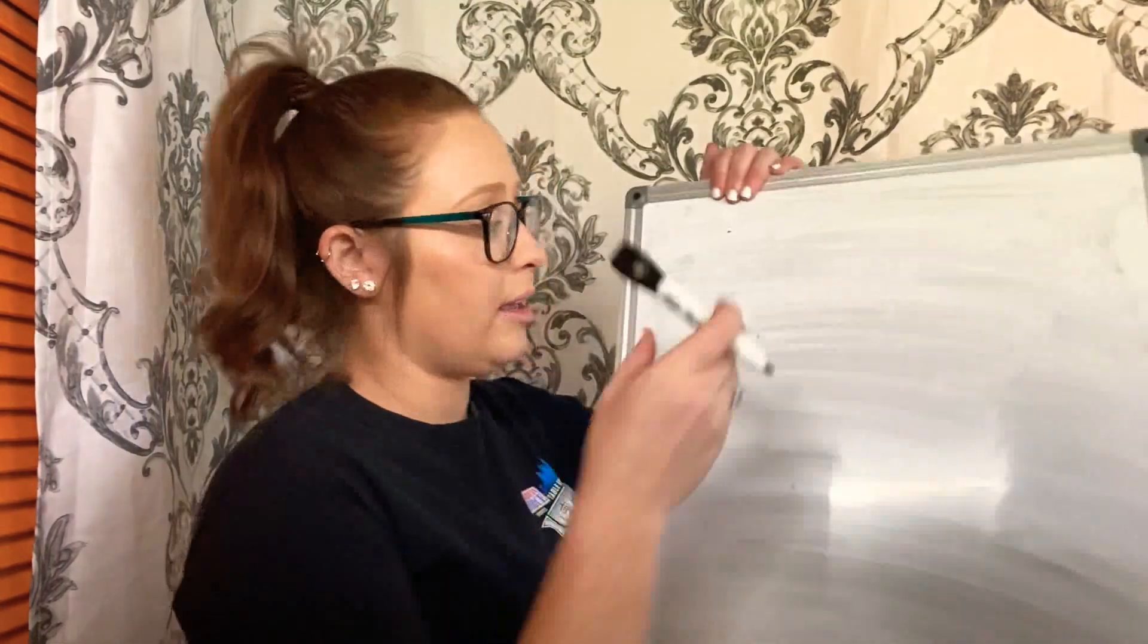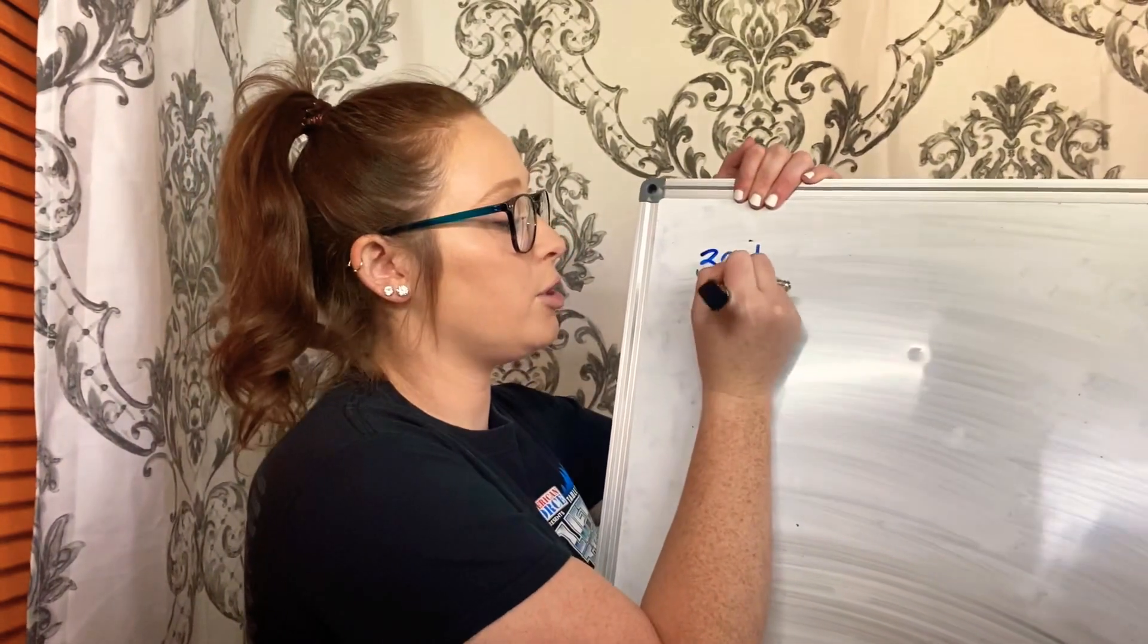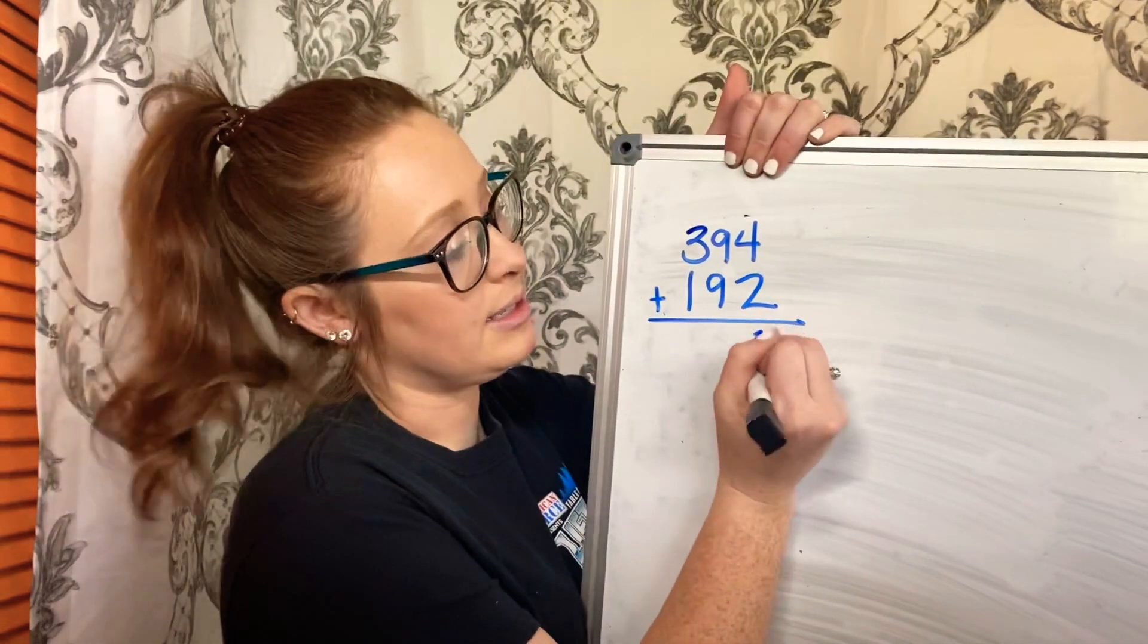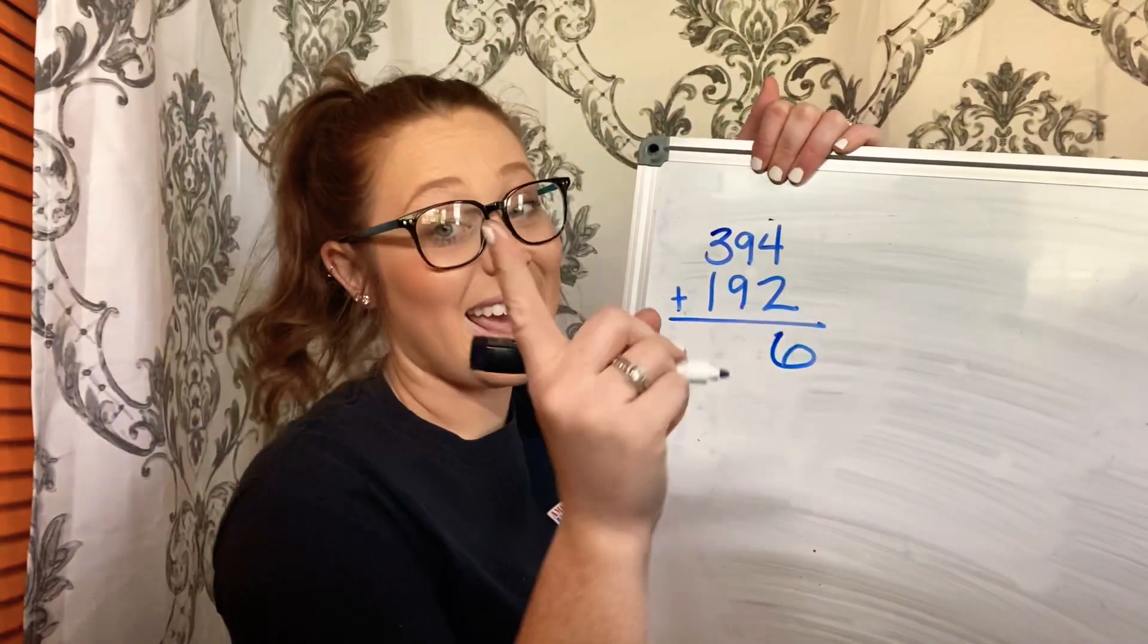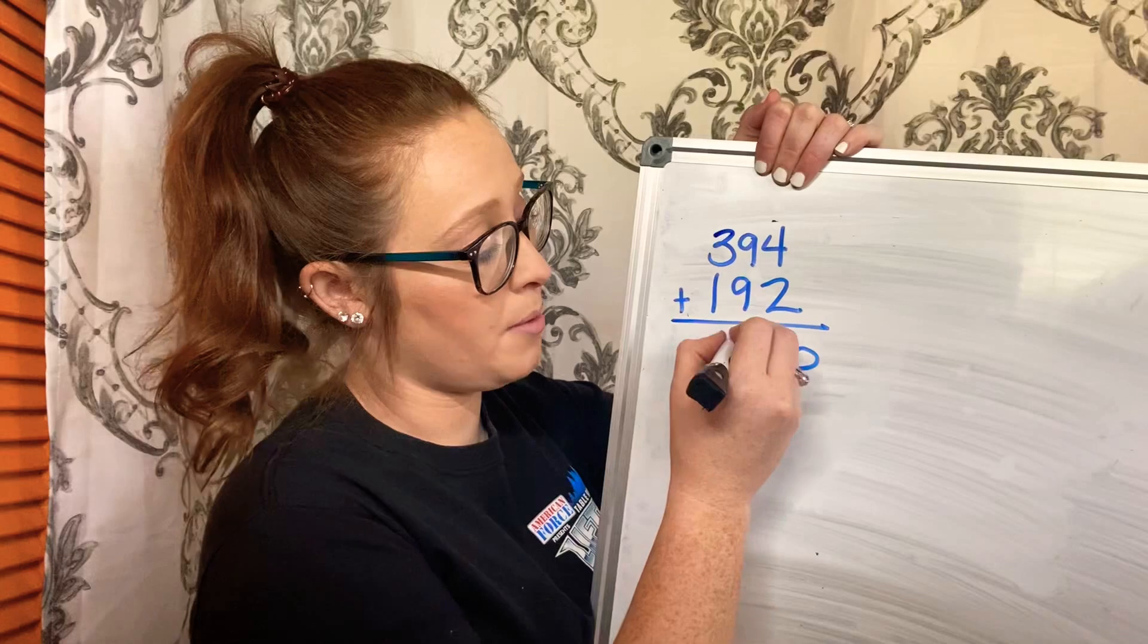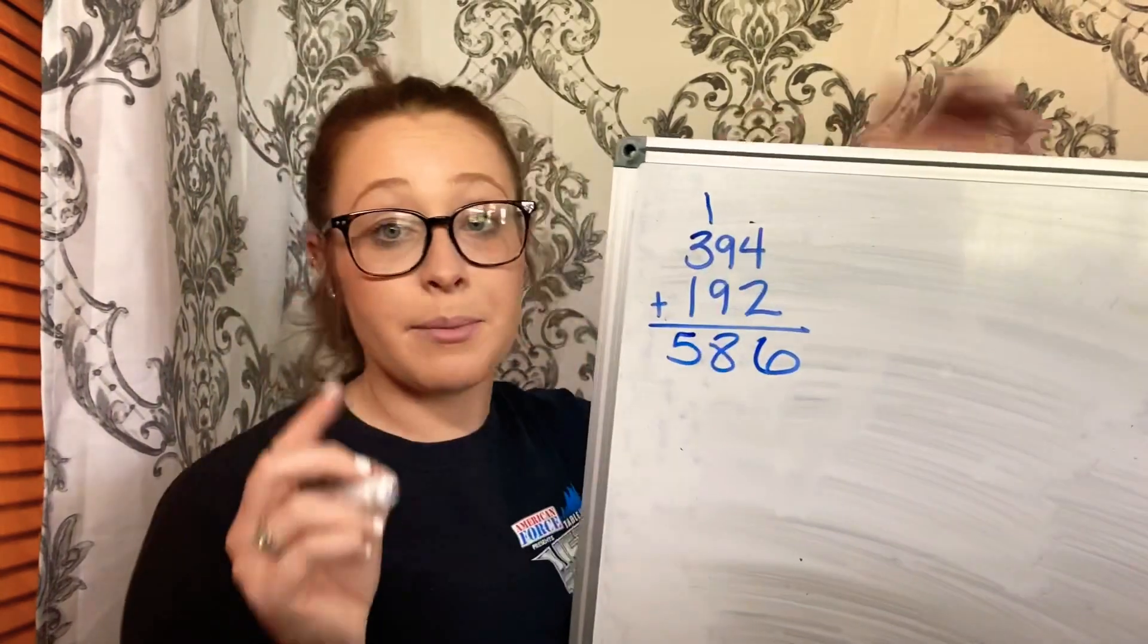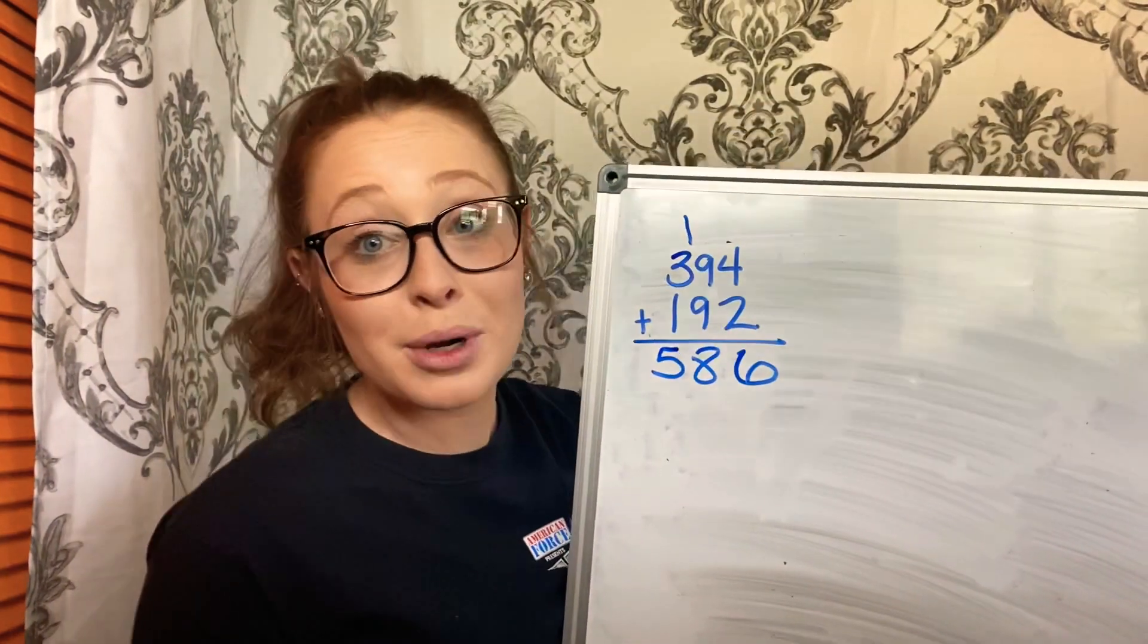Alright, so that first one, it is 394 plus 192. So, 4 plus 2 is 6, 9 plus 9 is 18, so I've got to put my 8, carry my 1. Now, 1 plus 3 is 4, 4 plus 1 is 5, so you've got to remember that you're carrying those numbers.